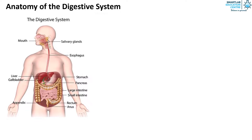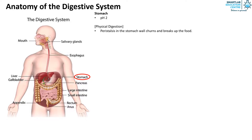Following the esophagus we have the stomach. The pH in the stomach is 2, a rather acidic environment. The physical digestion occurring here is peristalsis in the stomach wall, which churns and breaks up the food. Partly digested food becomes liquefied, forming chyme.